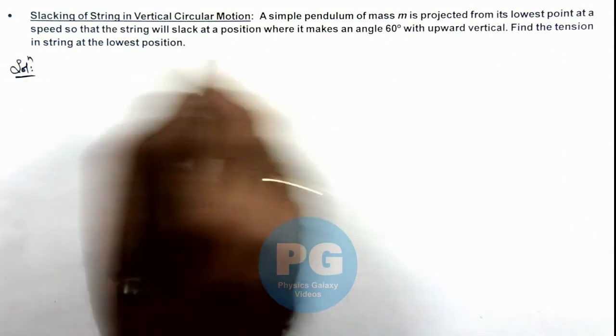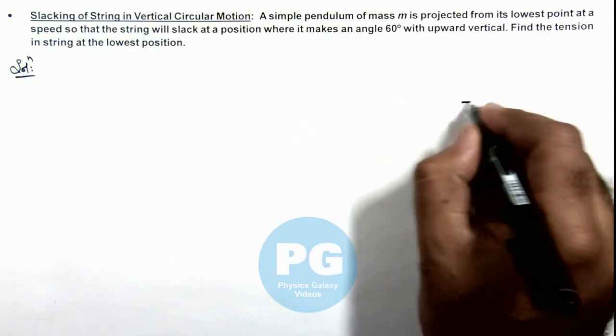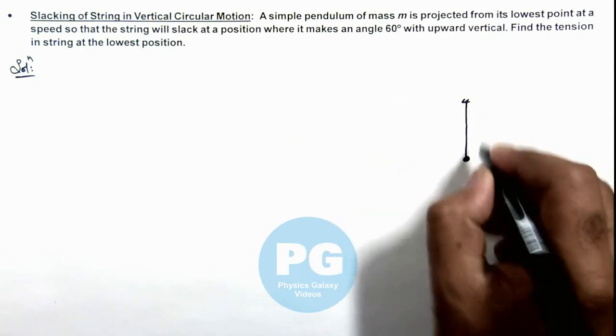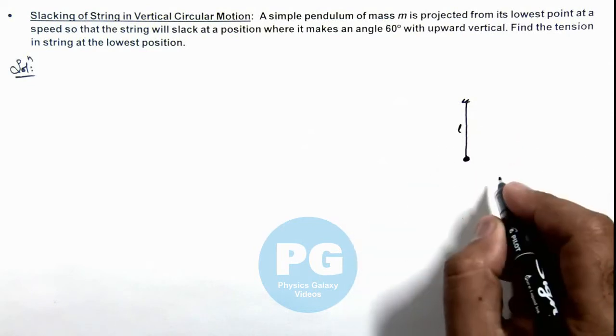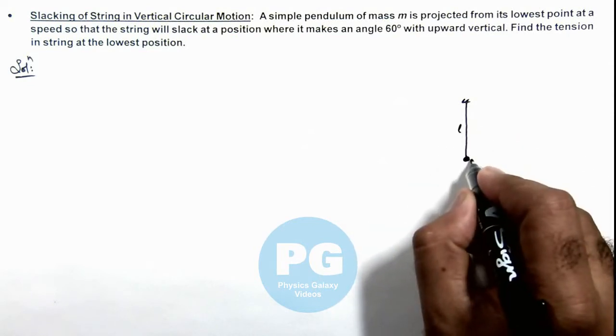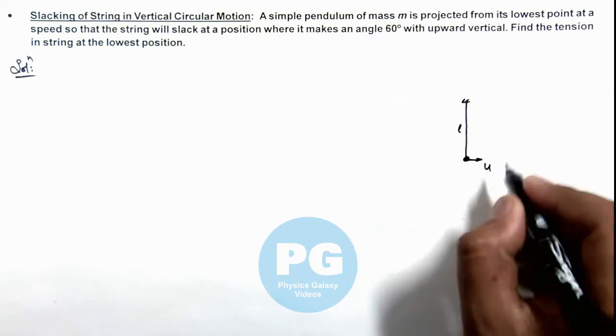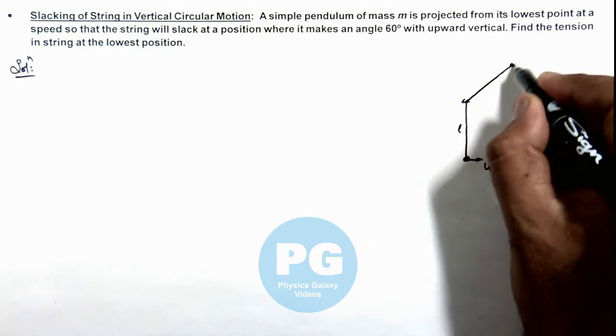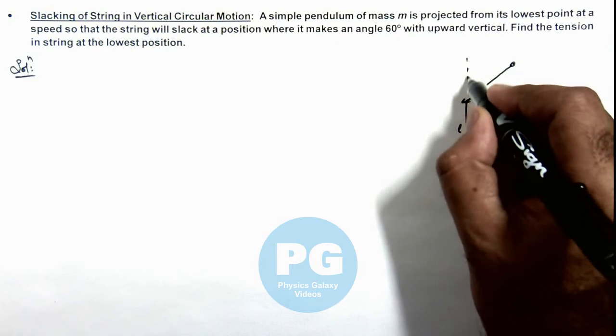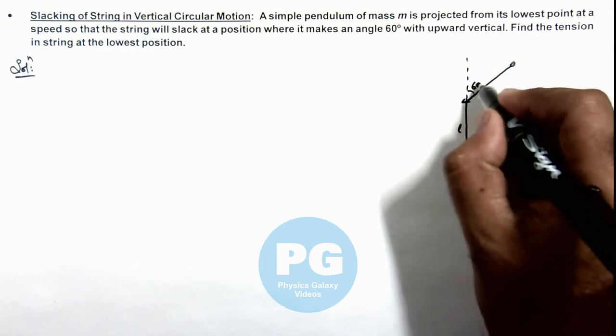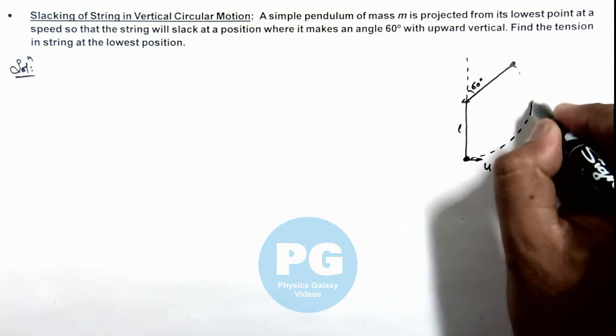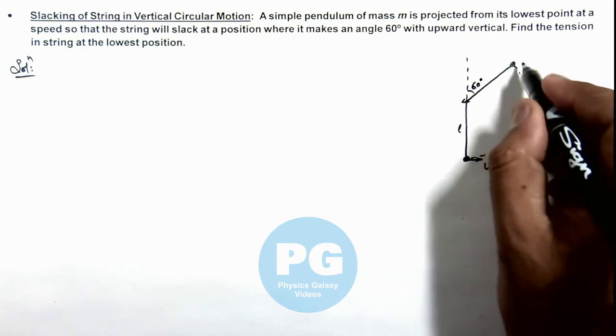To understand the situation, if we draw the picture: say if this is the simple pendulum of length l, and if the bob at the lowest point is projected at a speed u. We are given that when it is at an angle 60 degrees from the upward vertical, the string gets slack. So this is the way how in circular motion the bob will reach this position.